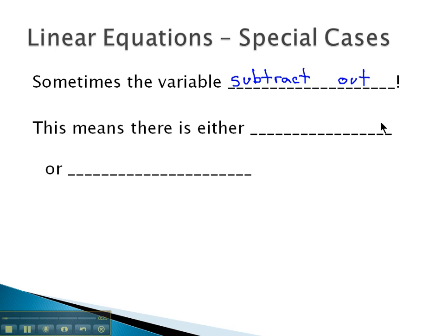With no variables left, we won't be able to determine that x equals some specific number. It actually means one of two things. It means there is either no solution, no value for x that makes the equation true, or there are an infinite number of solutions.